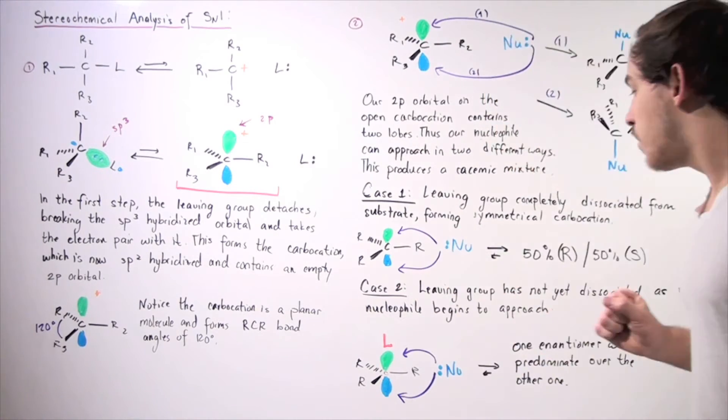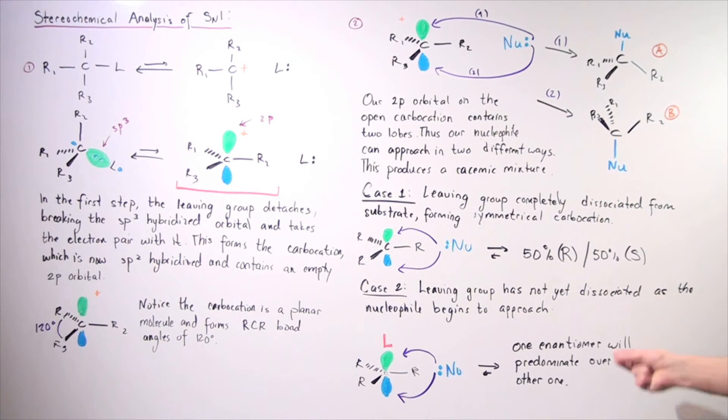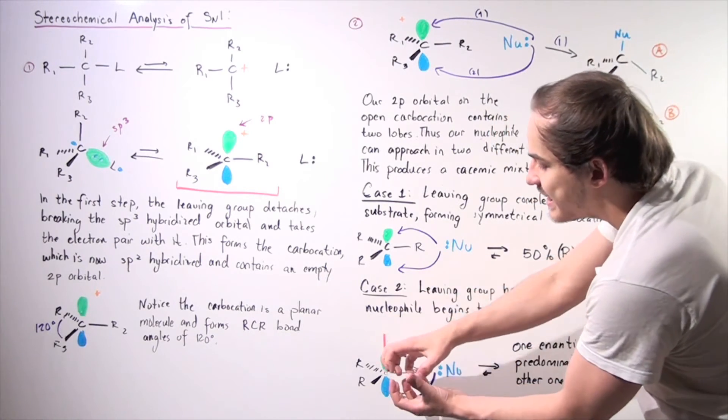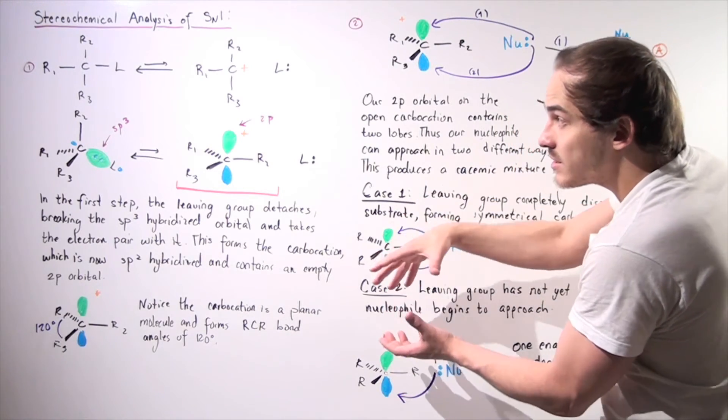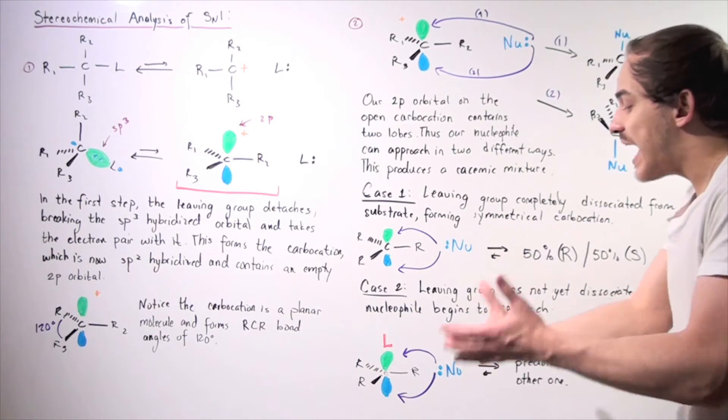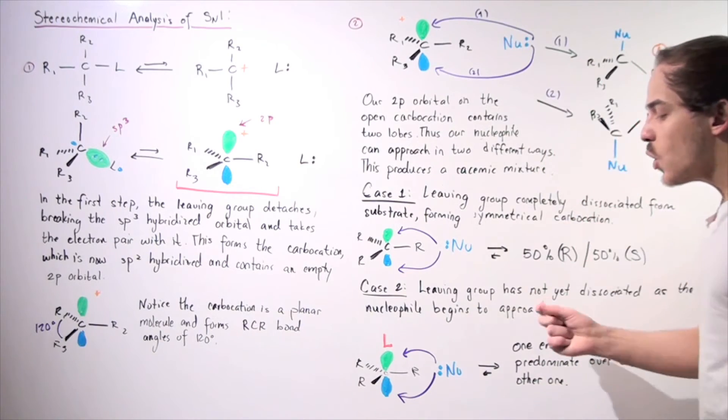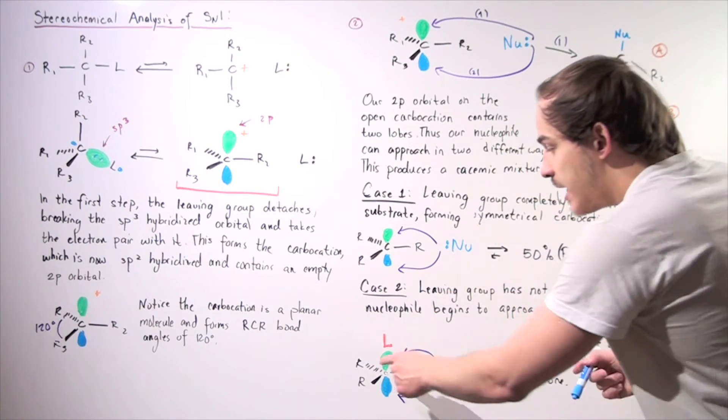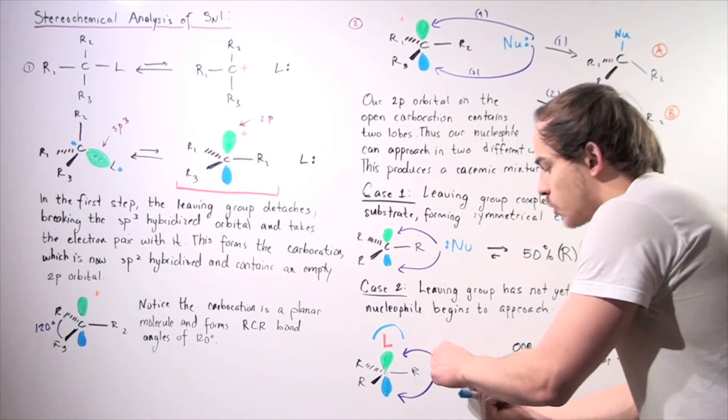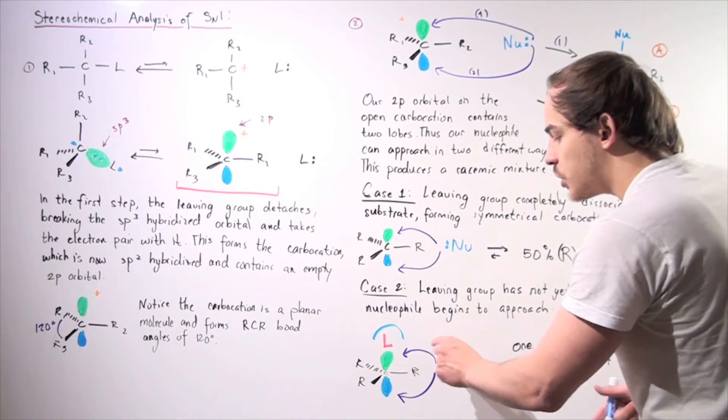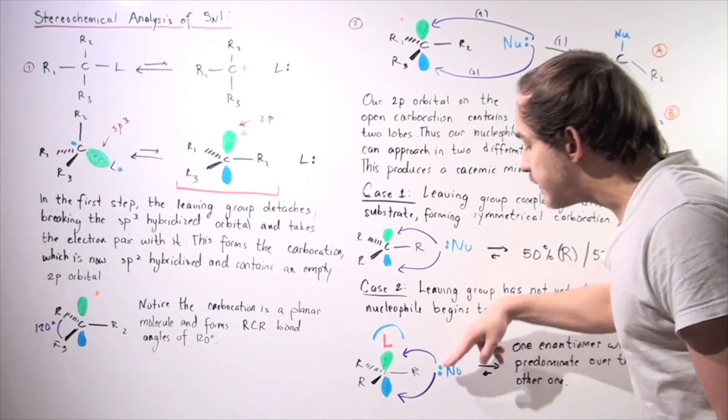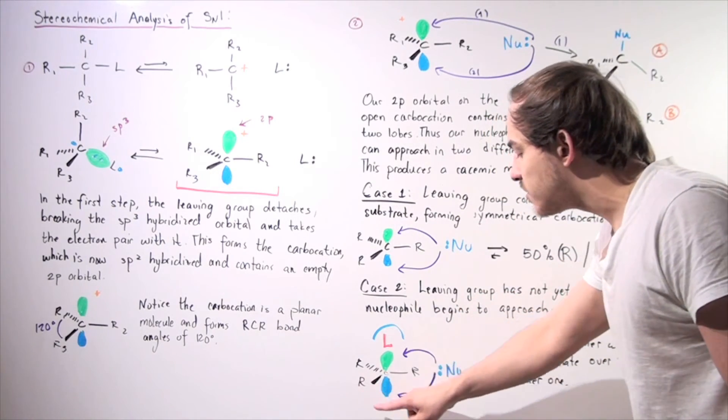How about in case two? Let's suppose the leaving group has not yet dissociated as the nucleophile begins to approach. Here we have our lobe, and let's suppose our nucleophile begins to detach, but haven't yet completed our detachment. It's still relatively close to our lobe. Now, where will our nucleophile attack? Where is it more likely to attack, from the top or from the bottom? Well, notice now, if it attacks from the top, this leaving group contains electrons orbiting that atom. And so, there will be electron density. And as these electrons approach these electrons, there will be electrostatic repulsion.